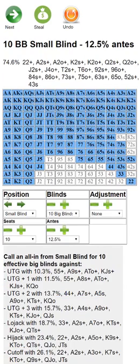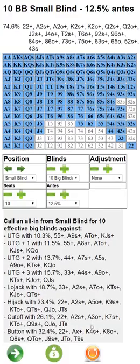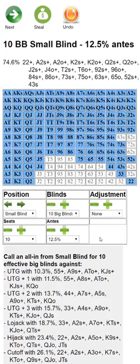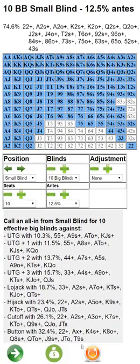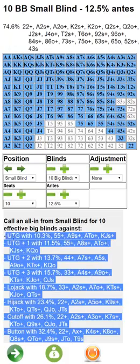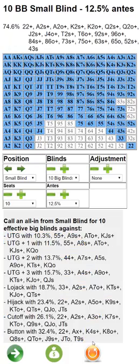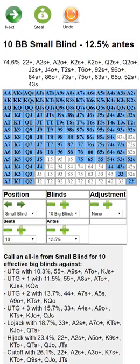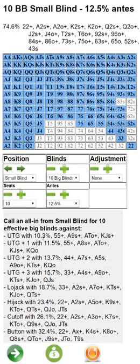From the small blind, you'll see you can actually call with even more hands — they extend down below. If you're on your phone, you can just scroll down and see them. Unfortunately phones are not big enough to display all of this information, but this is what you'll call with from the small blind.